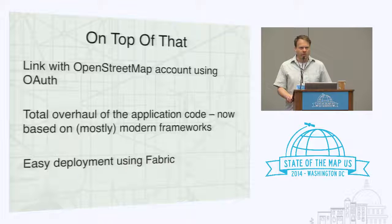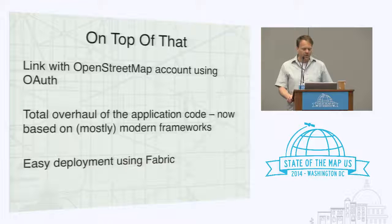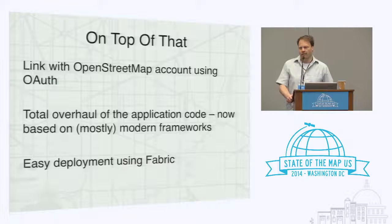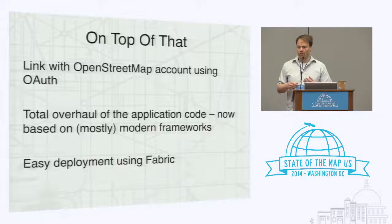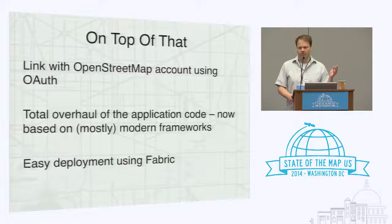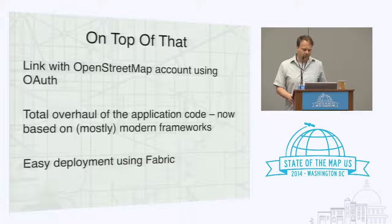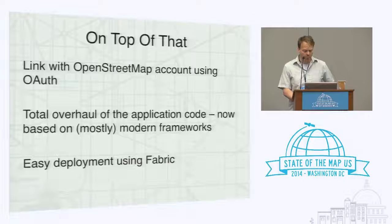The application code was entirely overhauled — nothing is the way it was in MapRoulette version zero or one. It's now based on mostly modern frameworks. We also have very easy deployment using a tool called Fabric, a deployment scripting tool where you can basically use one command, point to a server, and have your own instance of MapRoulette — if you want to do that for testing, or even your own full deployment. One thing we don't do yet is localization and internationalization, which is also in the works. So for right now, if you want to do something local, you might want to think about deploying your own MapRoulette server.